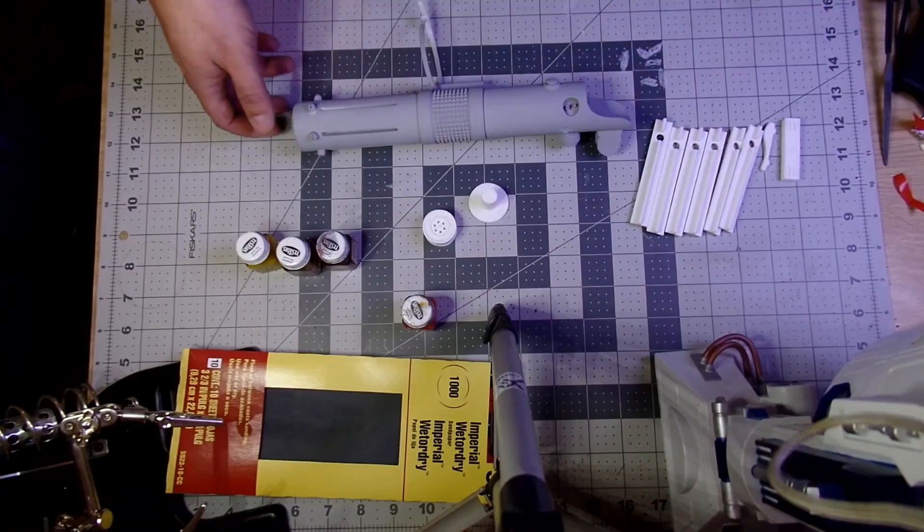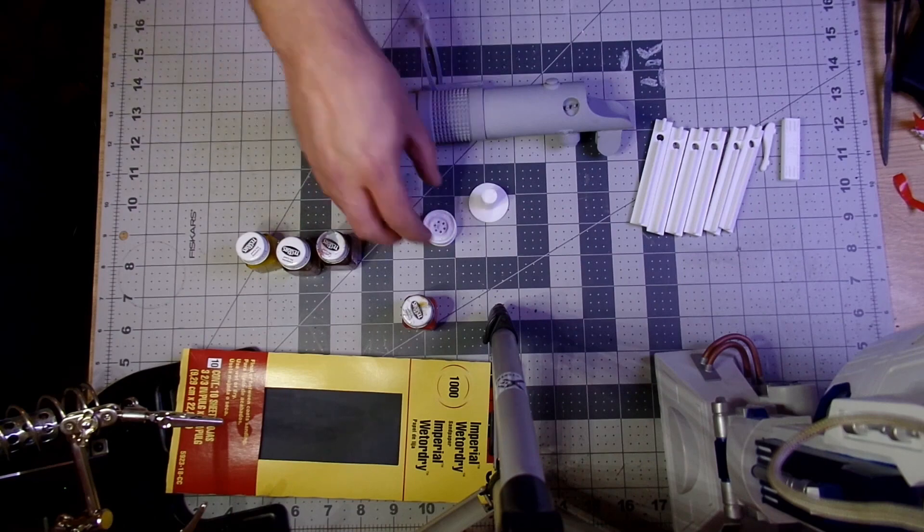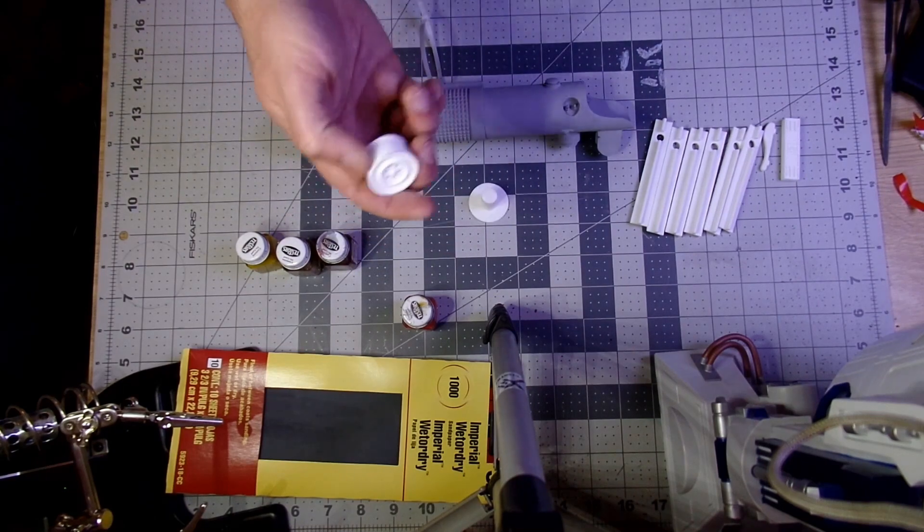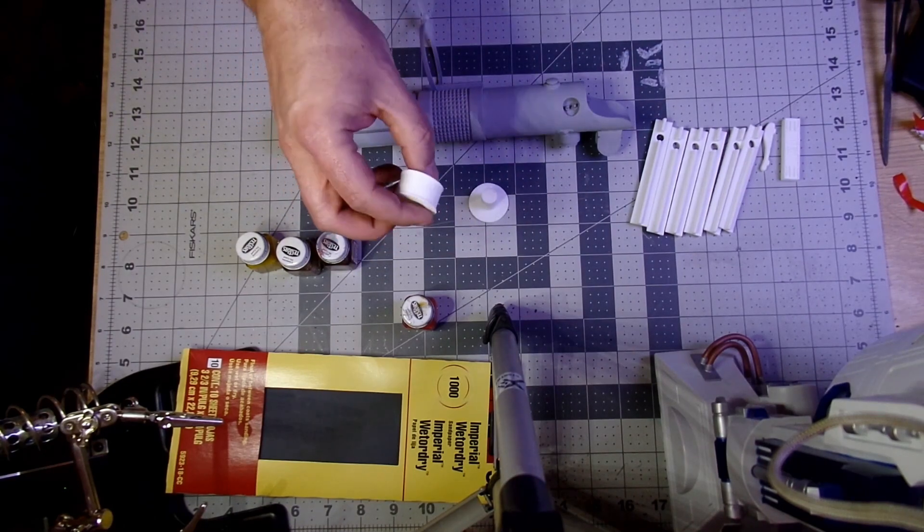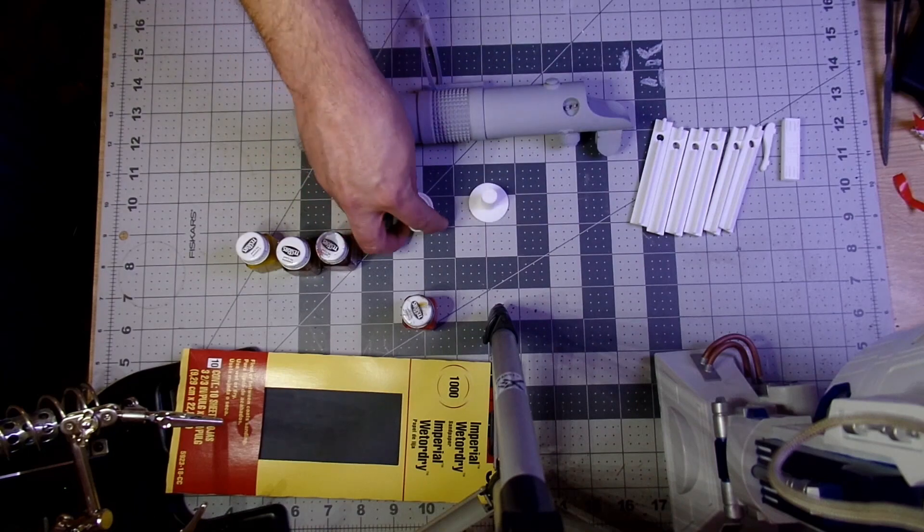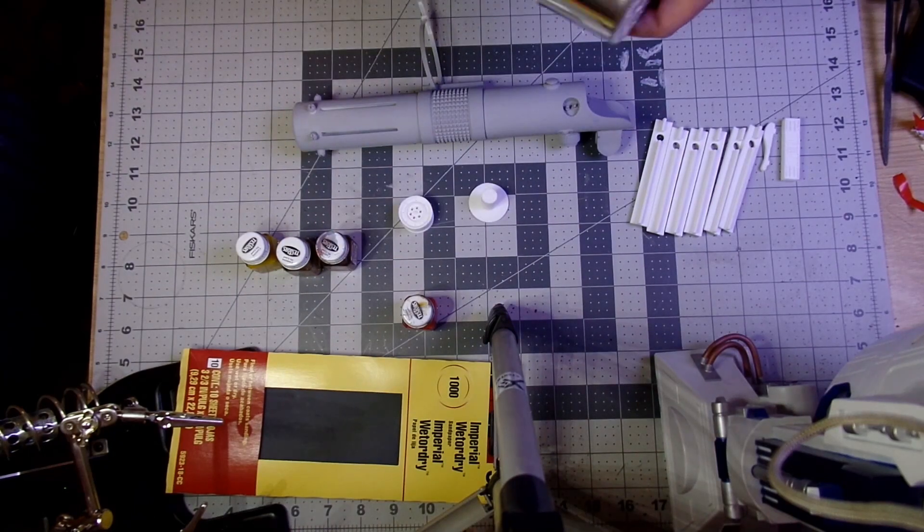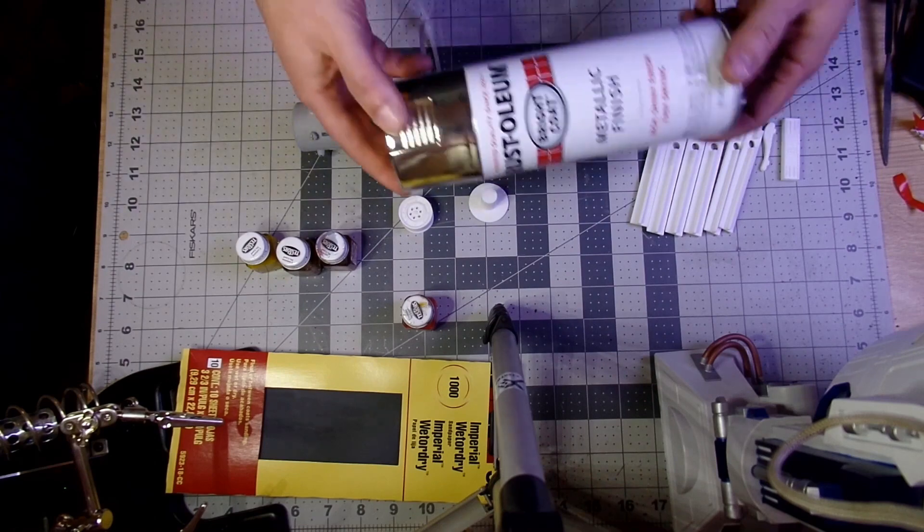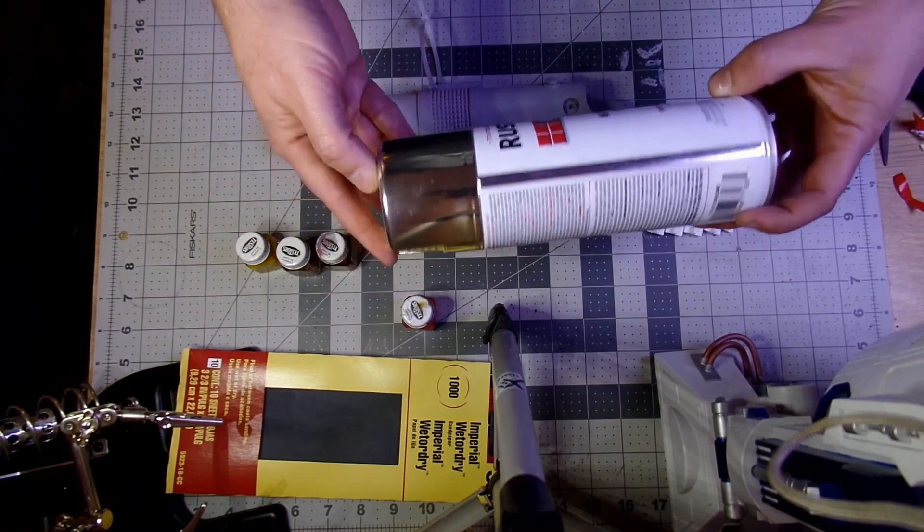I sanded the main body parts to 400 grit and then painted them with a filler primer. It is sandable. And then I sanded that to 1000 grit. I did all that because I'm using this metallic finish spray paint by Rust-Oleum. In order to get a good shiny finish, you need a really smooth surface first.